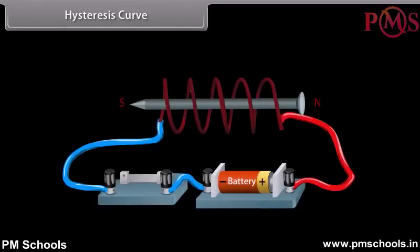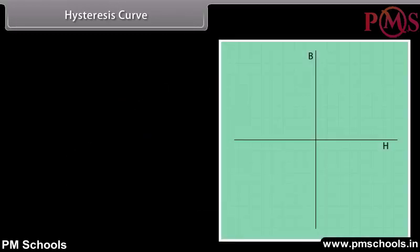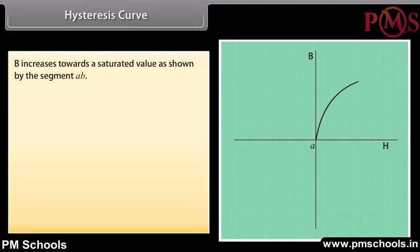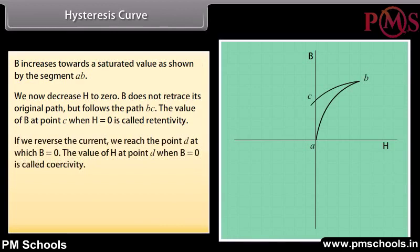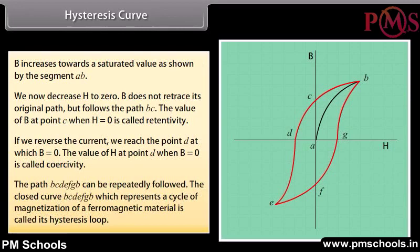Hysteresis curve: Consider a ferromagnetic material inserted in a solenoid. Initially both H and B are zero. As H increases, B increases to its saturated value along segment AB. When H is decreased to zero, B follows path BC; the value of B at point C (when H = 0) is called retentivity. Reversing the current reaches point D where B = 0; the value of H at point D is called coercivity. Further reversed current saturates B at point E; turning current to zero gives point F. Increasing current again saturates at point B. The closed curve BCDEFGB is the hysteresis loop.